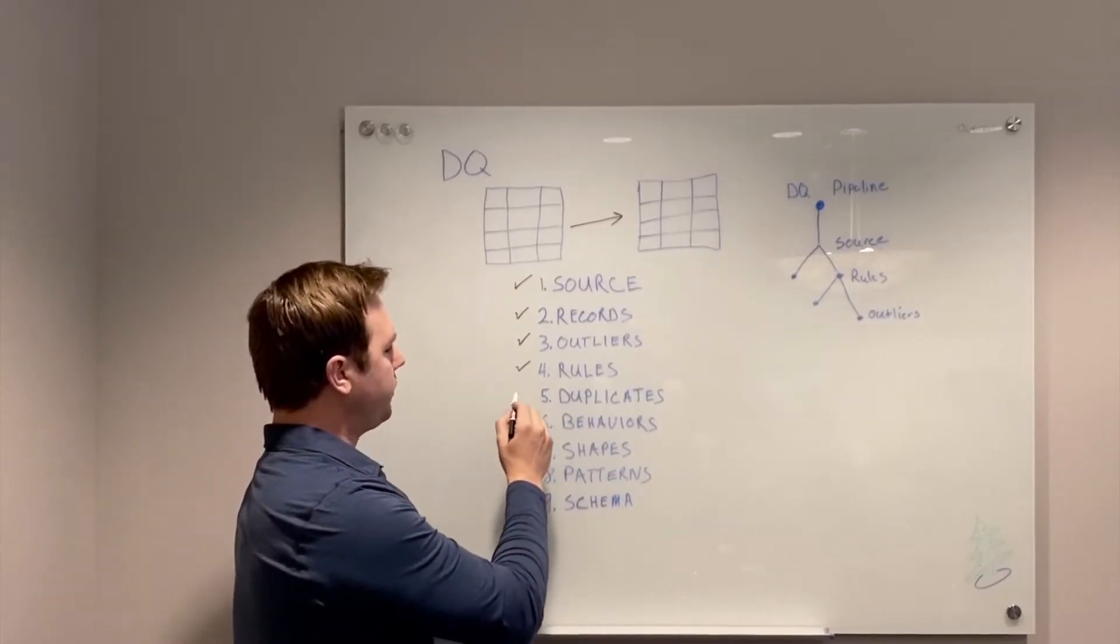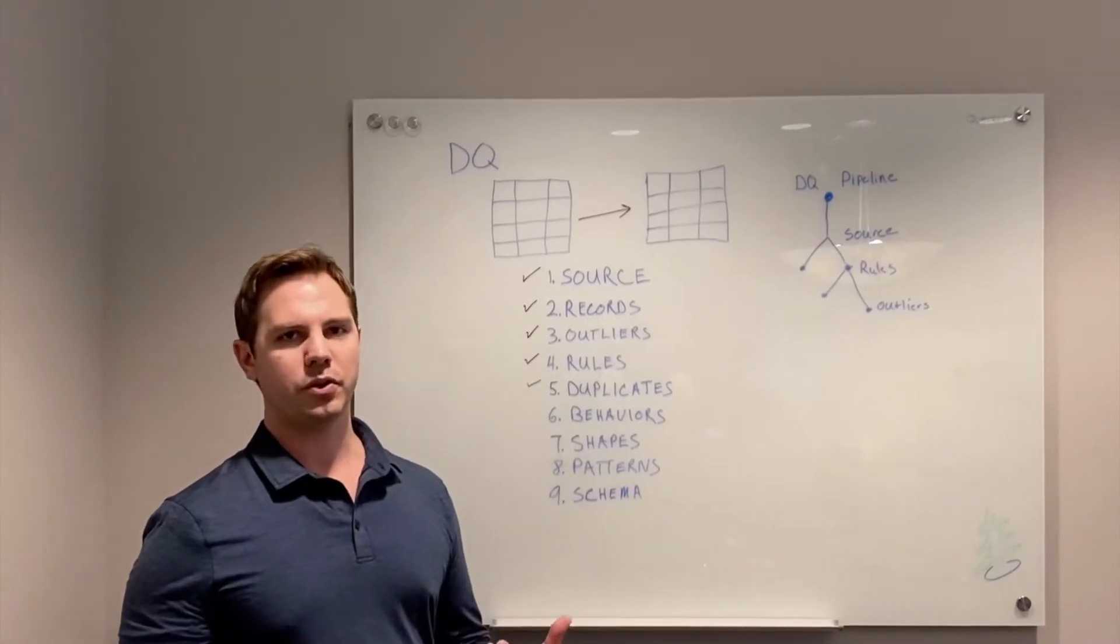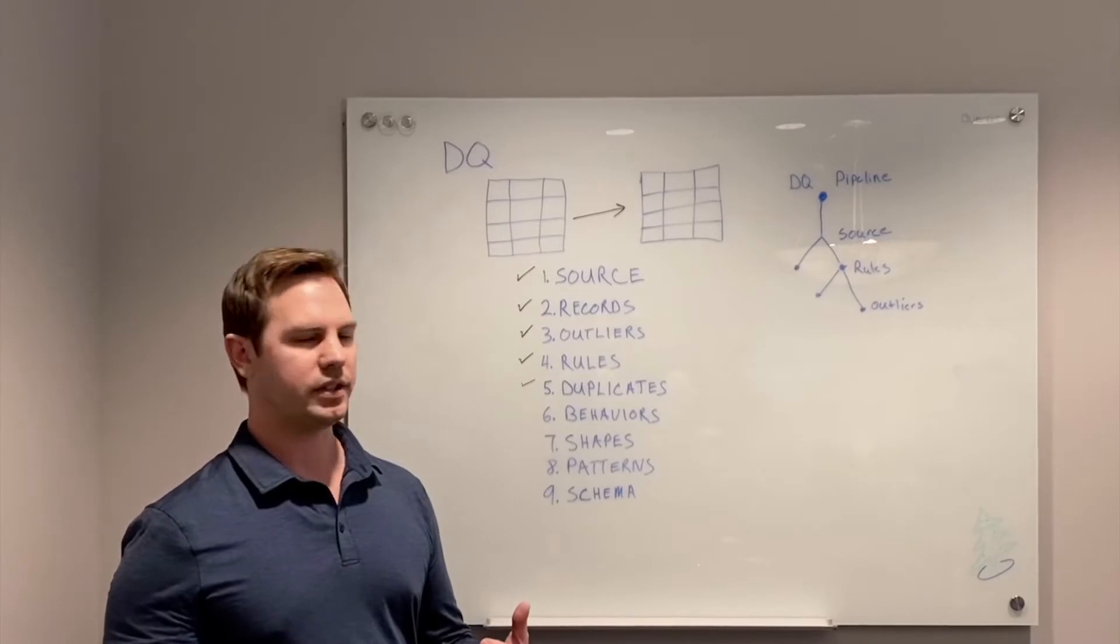Duplicates would be a good example, something like Bill Gates, William Gates, similar records that we want to make sure we don't have duplicate data in our systems.